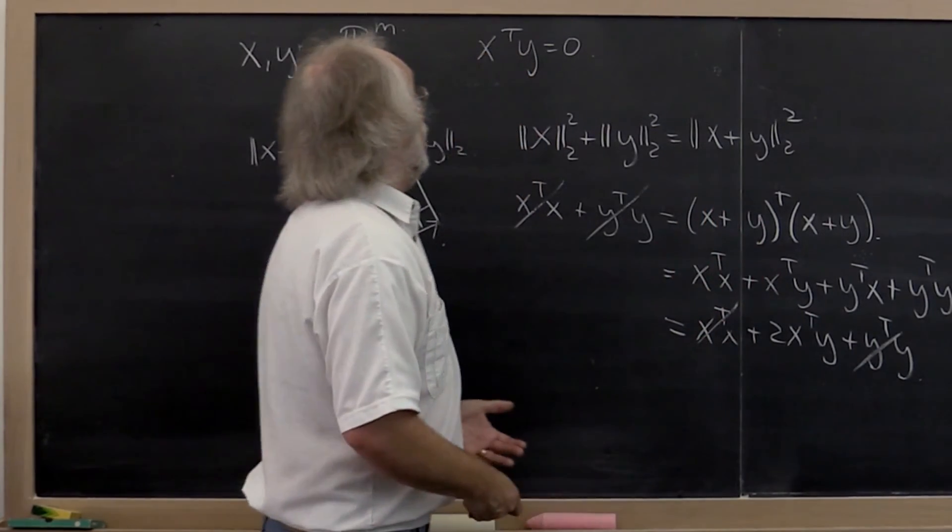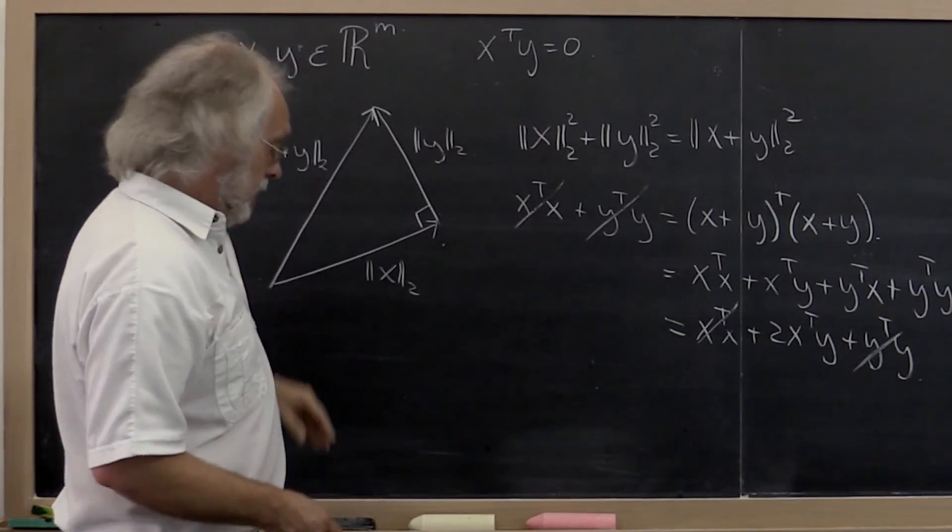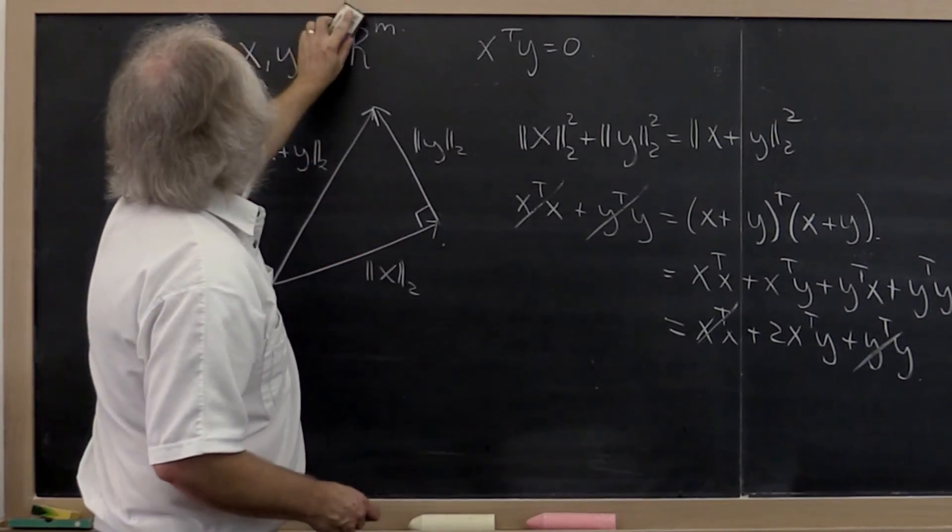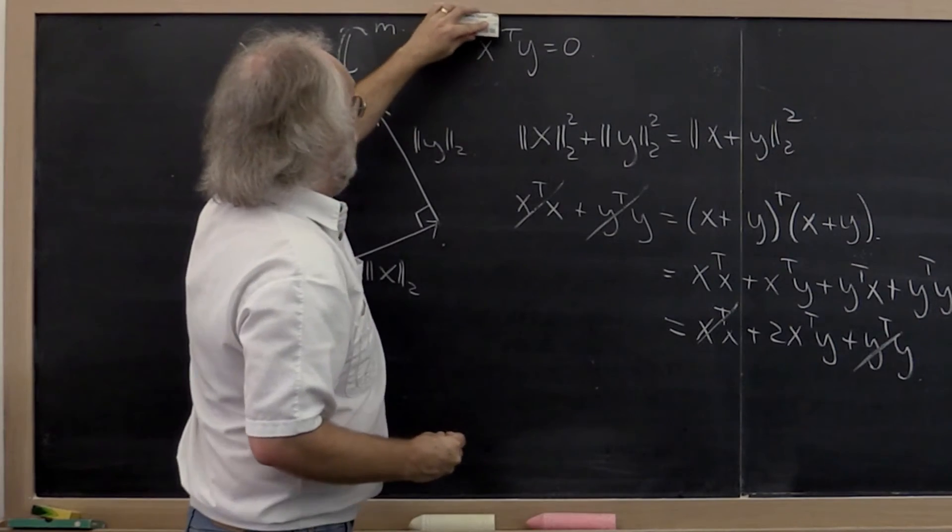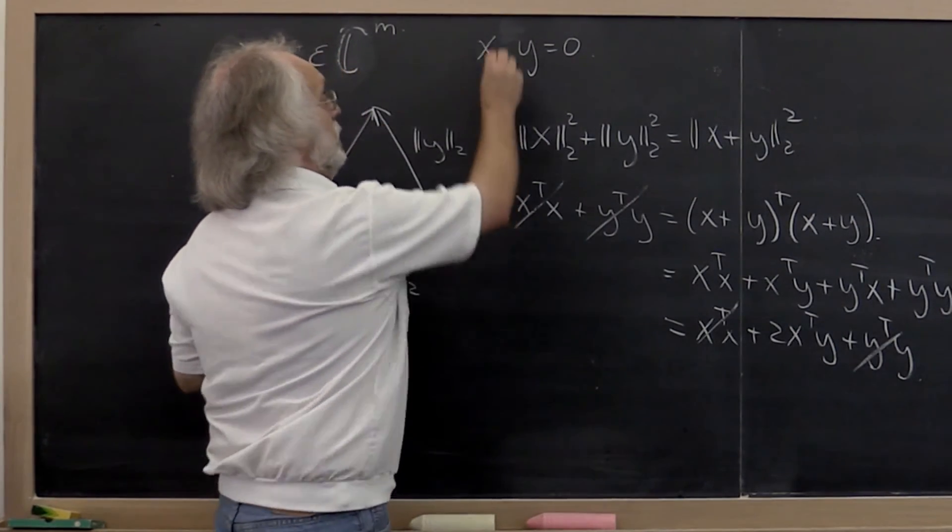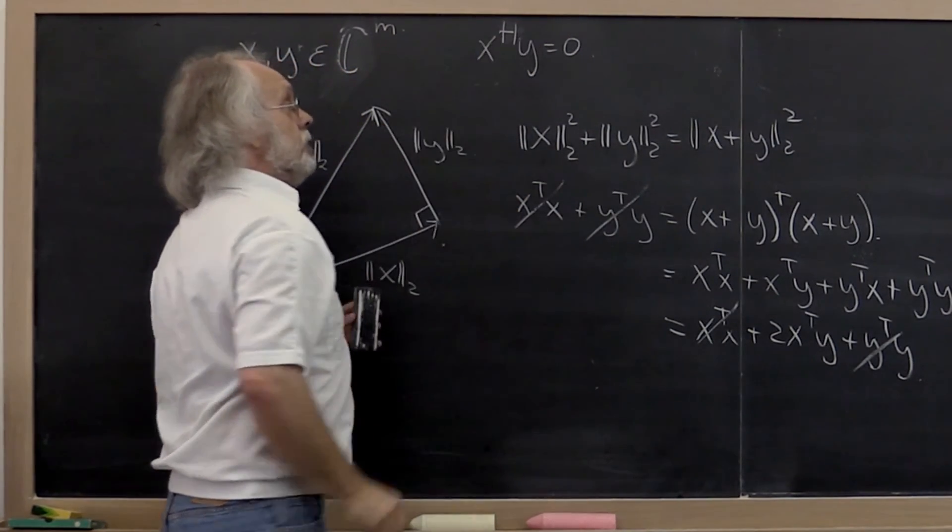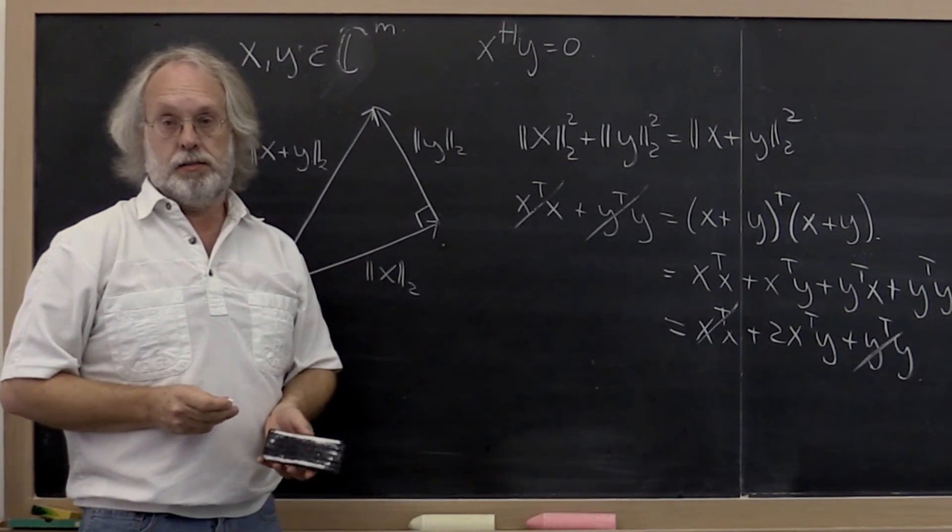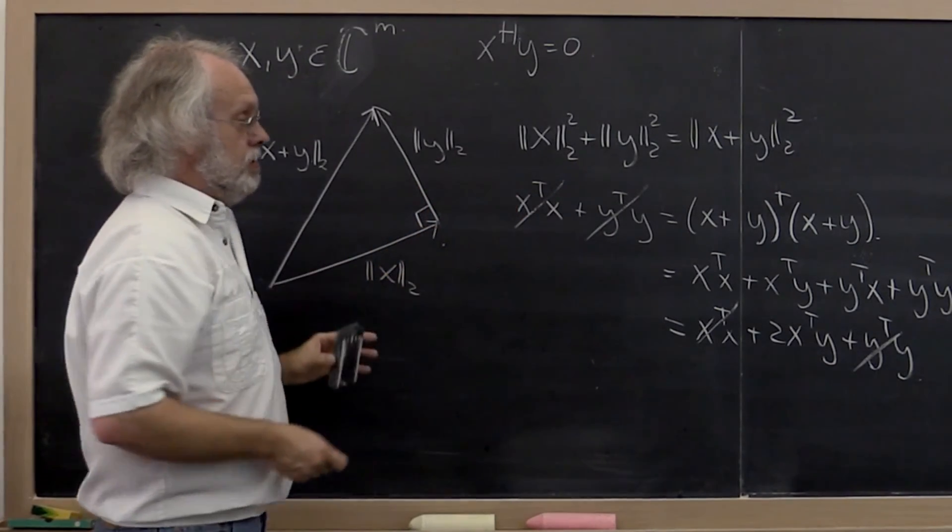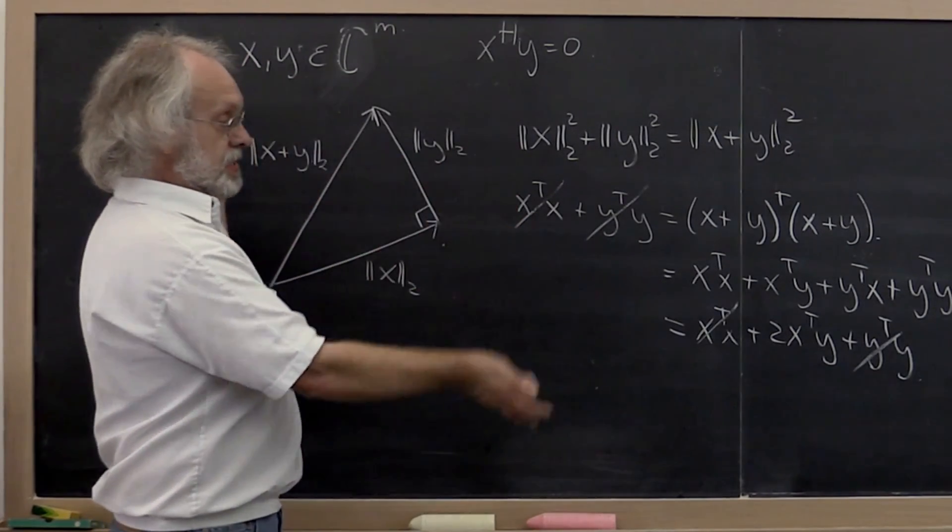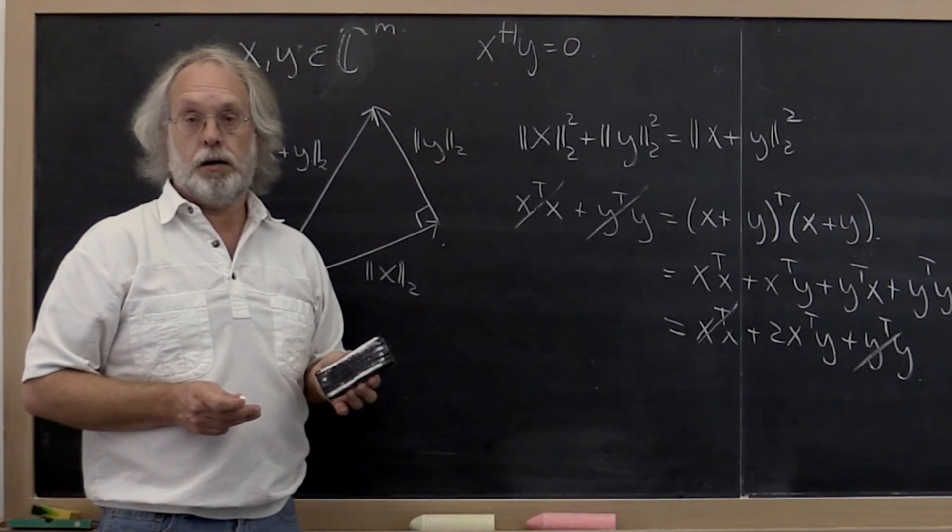Now when vectors are complex valued, then the same thing happens except with the Hermitian inner product. Now that's a little bit harder to picture. But the exact same results come out.